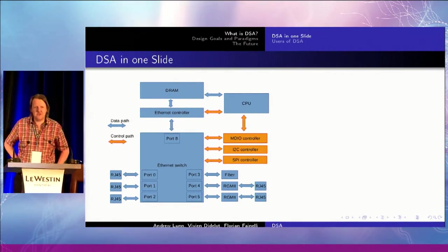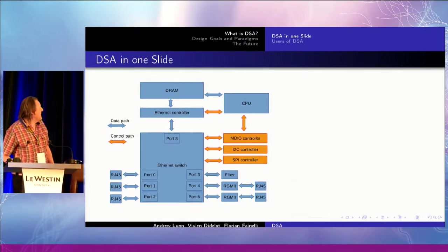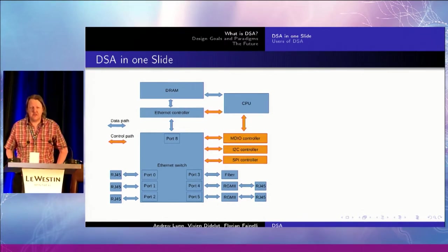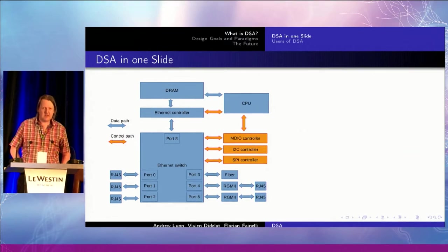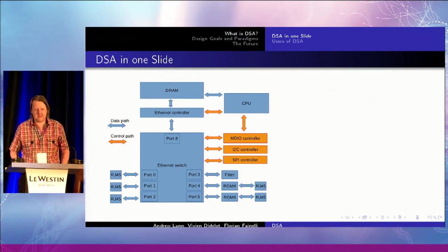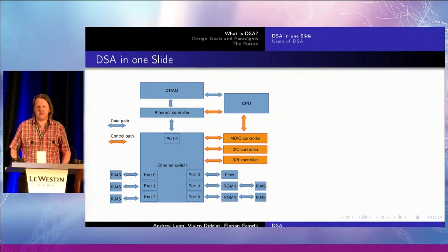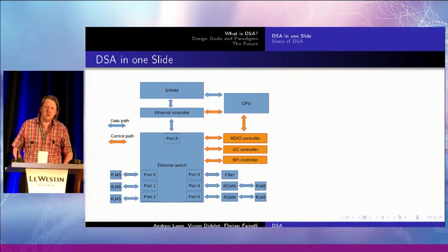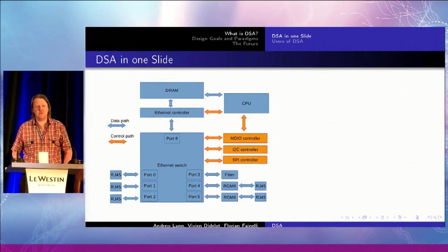We try to summarize it all in one slide, then you can fall asleep. We're in a different world to everybody else who's been talking about things today. We're in the embedded market — the WiFi access points, the set-top boxes. We're not top of rack. We're not talking about hundreds of ports doing 100 gigabit per second. We're probably talking about eight ports doing one gig if we're lucky. We're talking about a little CPU, an ARM or a MIPS, some DRAM, Ethernet controllers, that sort of thing.